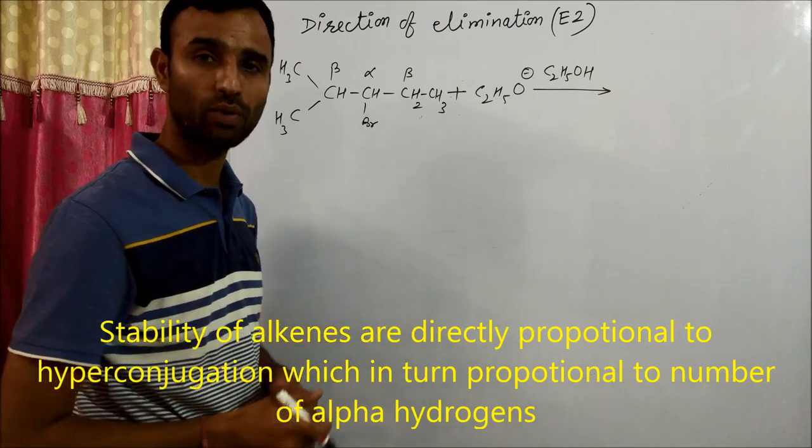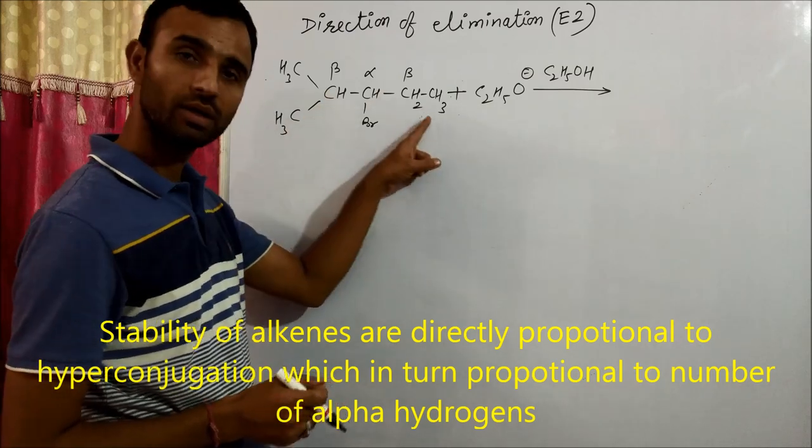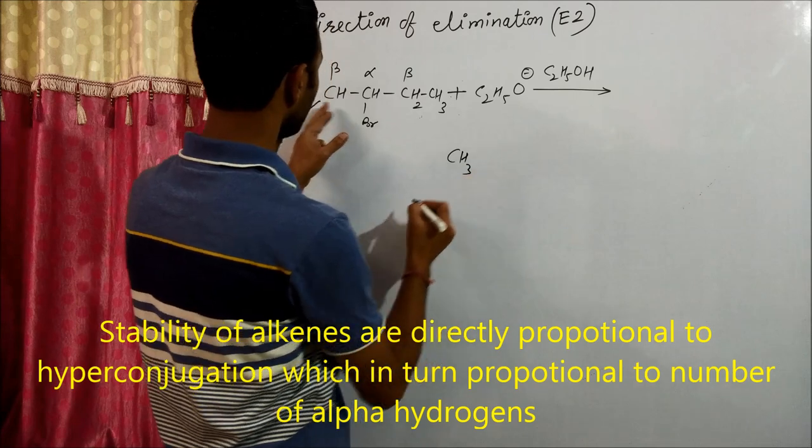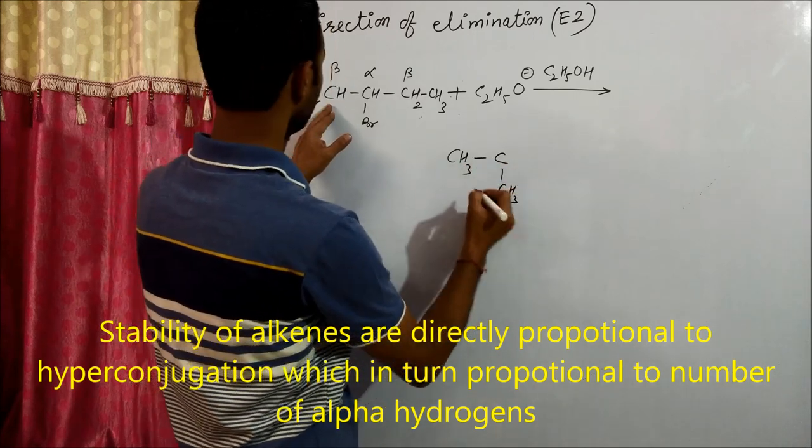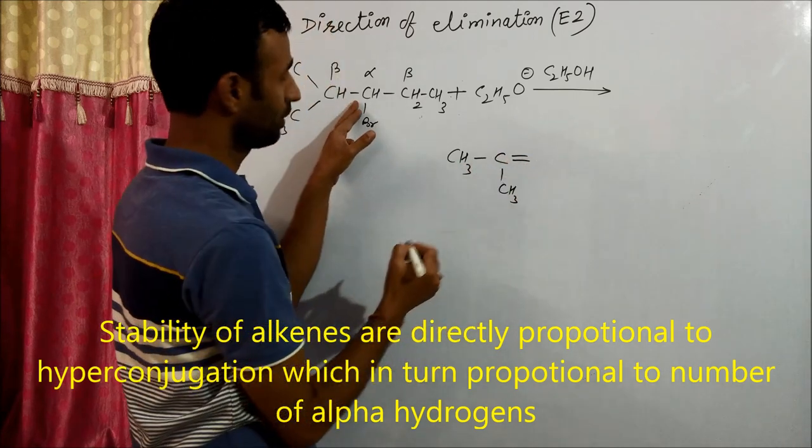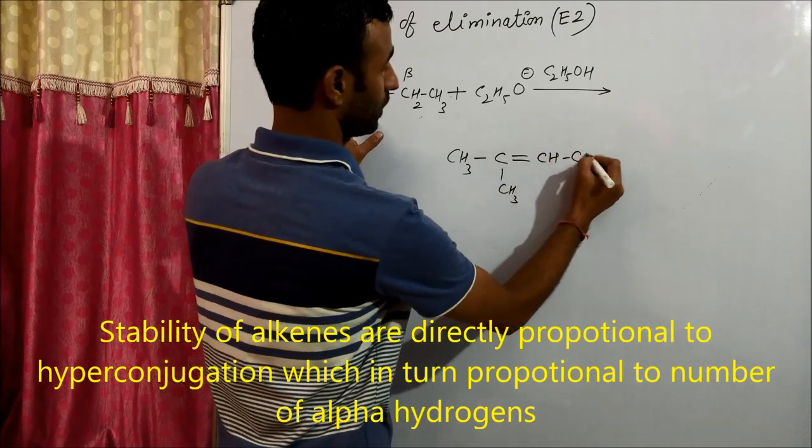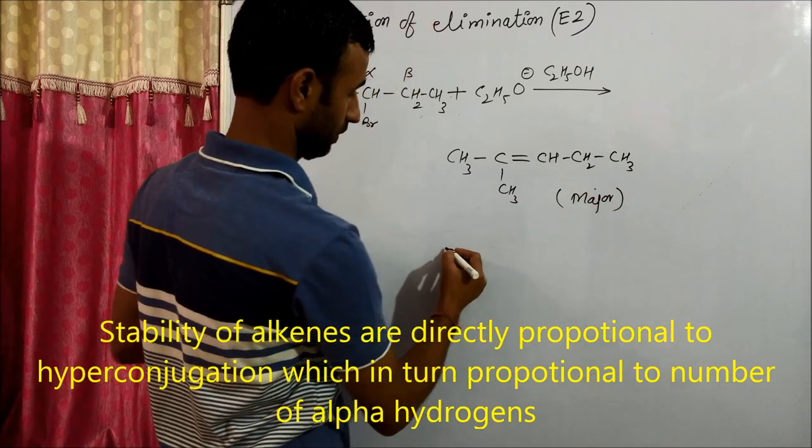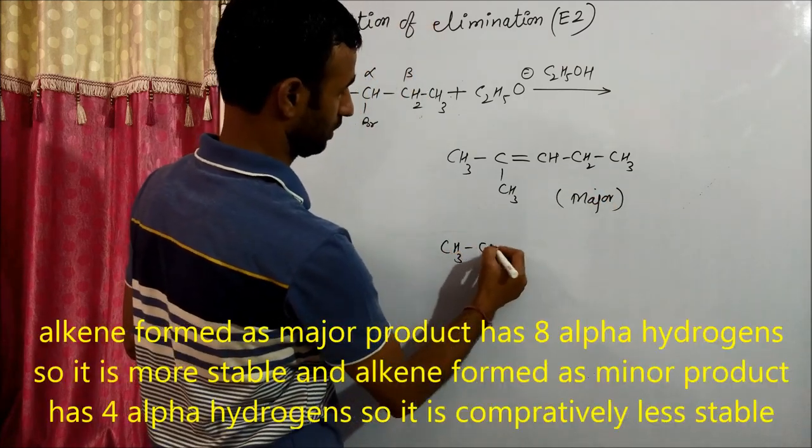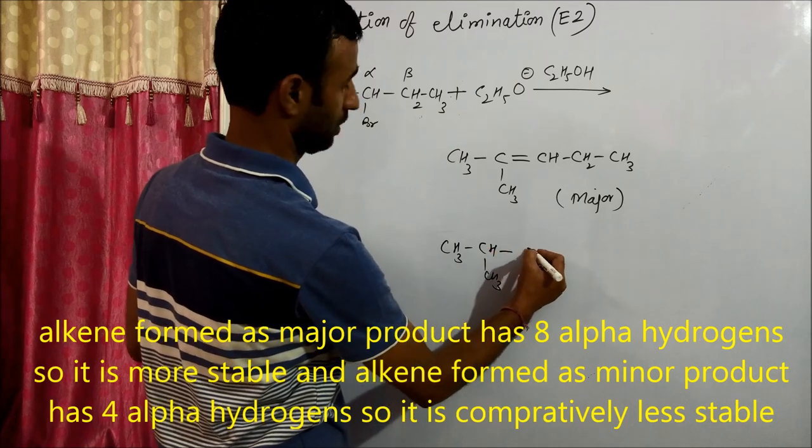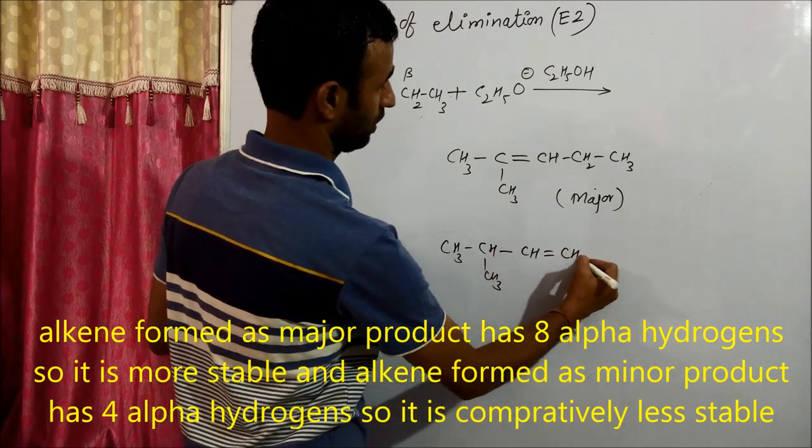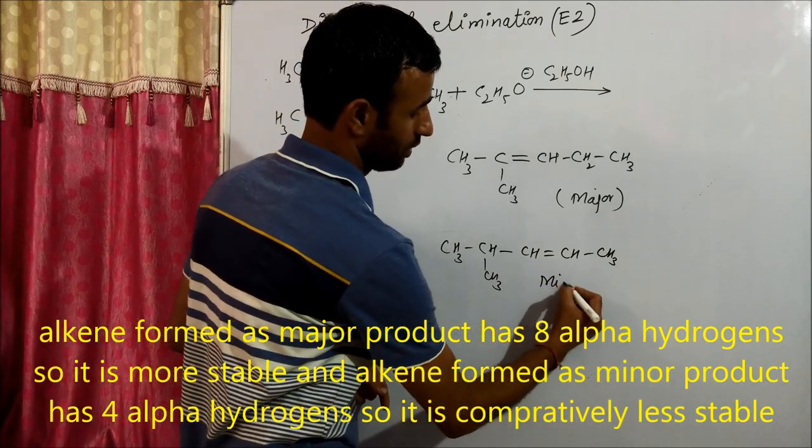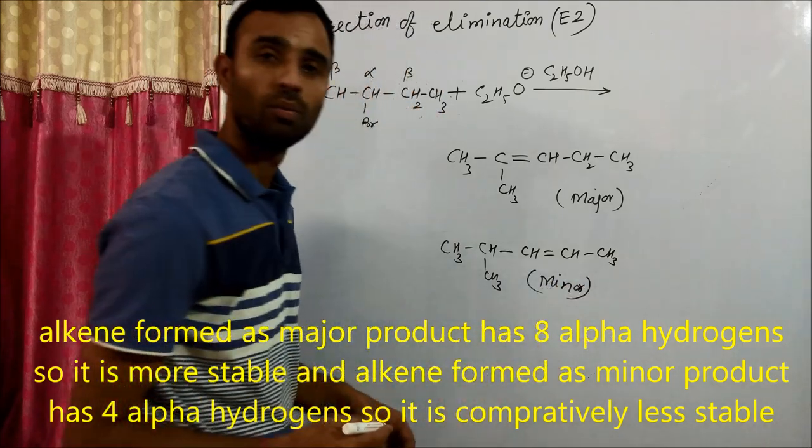Which has lesser number of hydrogen? One, two. So obviously this is the major product. CH3-C(CH3) double bond CH-CH2-CH3. This is major product. And this one is minor product.